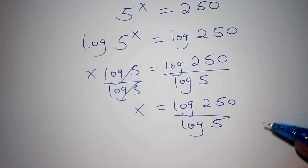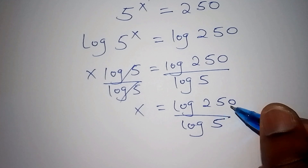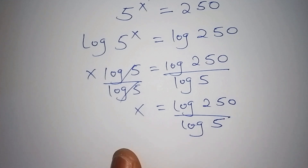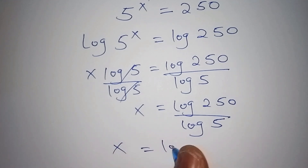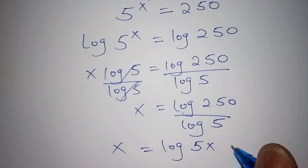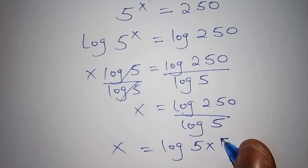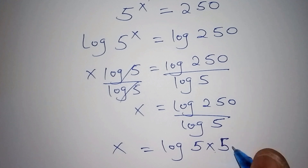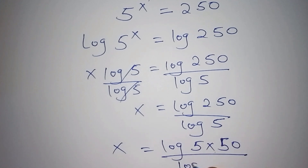We don't stop here — we continue by factorizing deeper. The log of 250 can be simplified: x equals log of 5 multiplied by 50, all over log of 5. Because 250 equals 5 times 50.